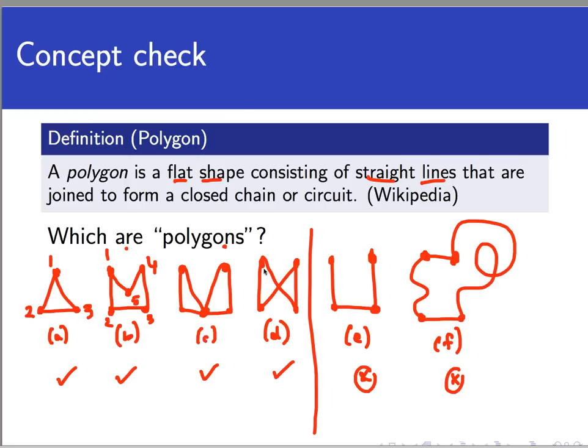This one would also be considered a polygon even with the intersection of the line segments because this is actually even easier, I think, to understand. If I kind of go around in a little tour like this, one, two, three, four, one, that's definitely a closed chain, and this is flat and made up a straight line. So those are all considered polygons.